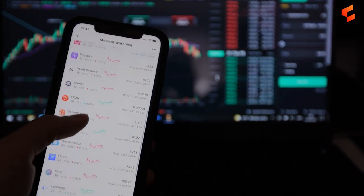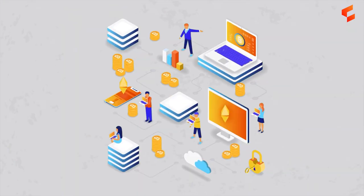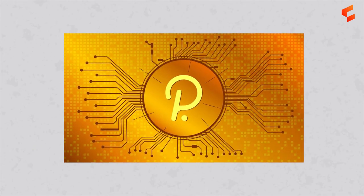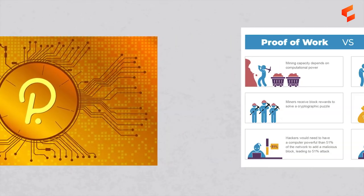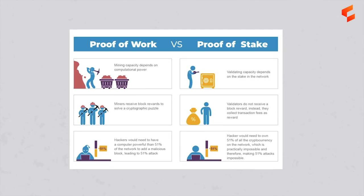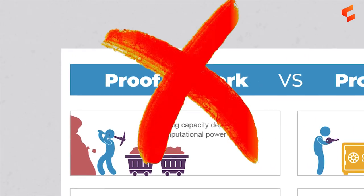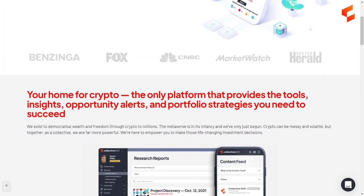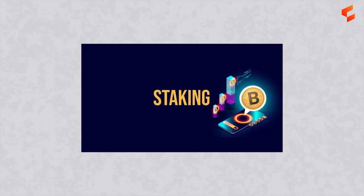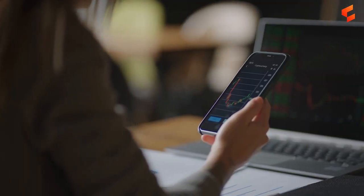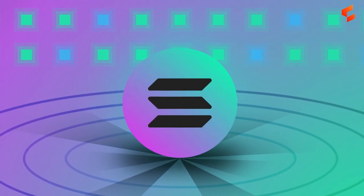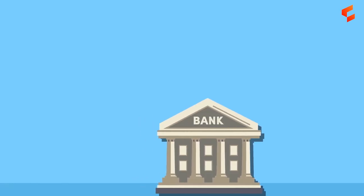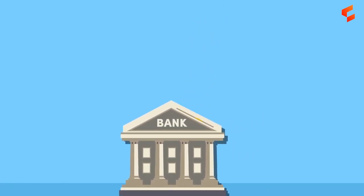If you own any of these cryptocurrencies, by staking them you help to secure their blockchains — stake Solana to help secure the Solana blockchain, stake DOT to help secure the Polkadot blockchain. It should be noted that this feature is only possible with proof-of-stake blockchains and not proof-of-work — Bitcoin is a proof-of-work blockchain. When you do stake a cryptocurrency, you earn a reward for your contribution to the network. In Solana's case you earn more Solana, and in Tron's case you earn more Tron.